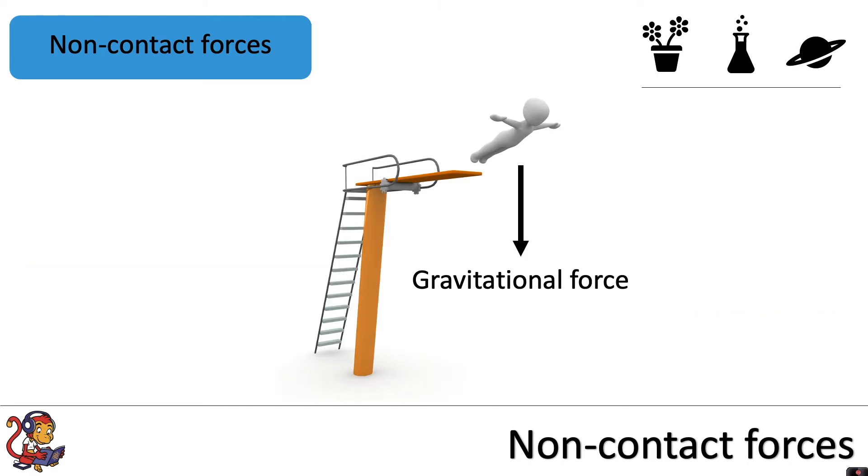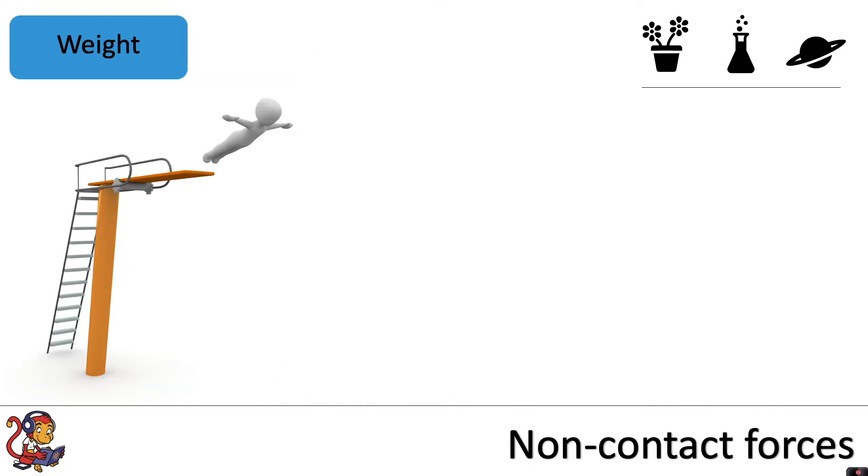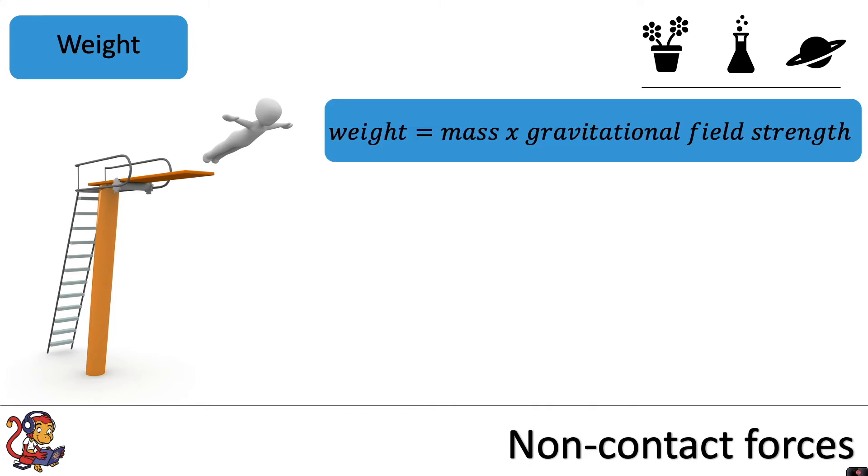Gravitational force is the force with which you're pulled down towards the Earth. And this is closely linked to weight, which is why sometimes on force diagrams you may see people write gravitational force or you may see weight. We're going to focus a bit more on weight just now. There is an equation that we can use to calculate weight, and that is weight equals mass times gravitational field strength.